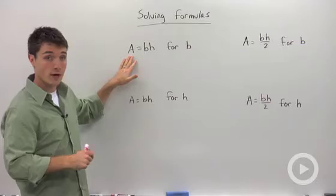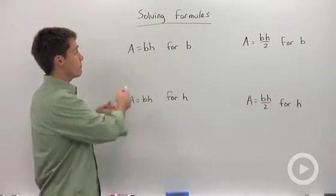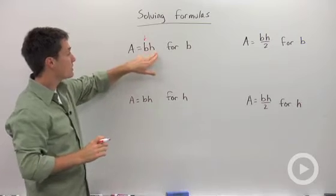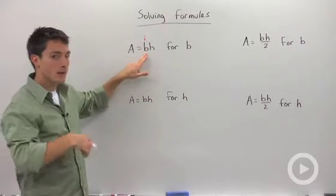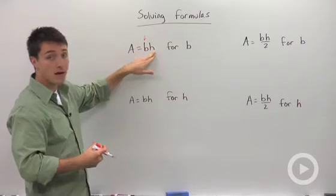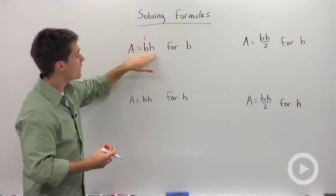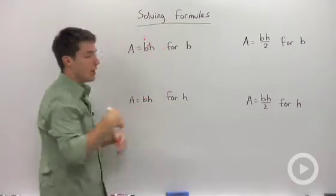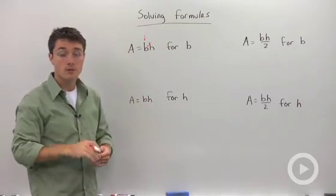Right now it's isolated for a. So if I'm trying to solve for b, first thing I ask myself is what is happening to that variable that I'm solving for? Am I adding something to it? Am I dividing something? Well, it looks like I'm multiplying it by h. Remember, when you have two variables next to each other, the implied operation is multiplication.